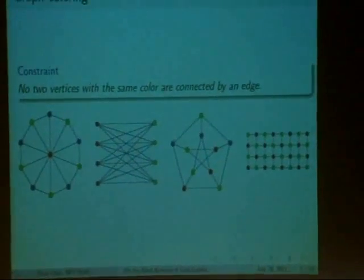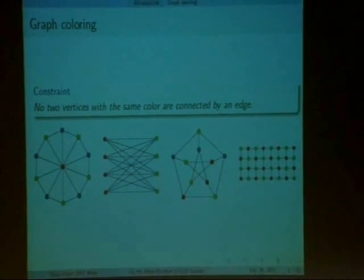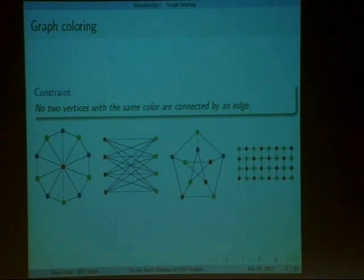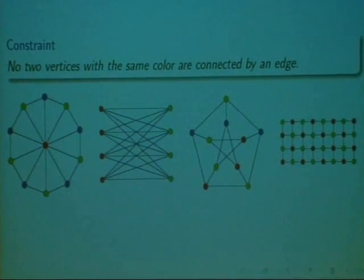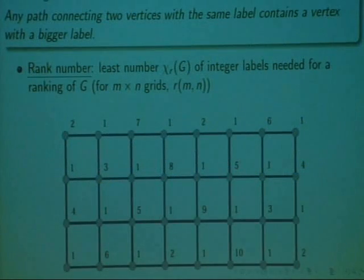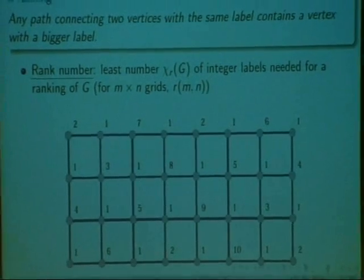One of the most famous graph labeling problems is the graph coloring problem. This asks, how can you label the vertices of a graph with colors so that no two adjacent vertices will share the same color? A problem related to this, which will be the object of our talk, is called graph ranking.